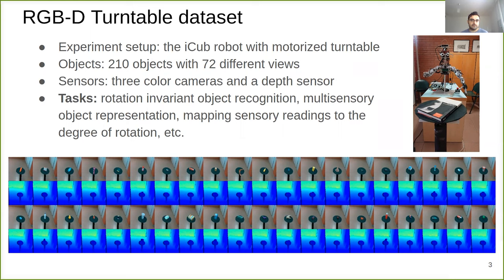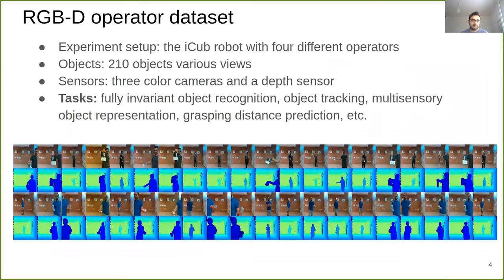After rotating for 5 degrees, we capture depth and color images. We repeat this procedure for all objects until the full rotation is completed. We propose that this data set can be employed for rotation-invariant object recognition and object representation.